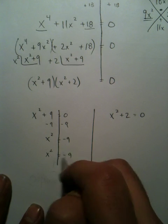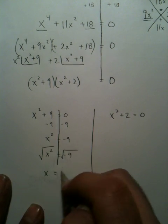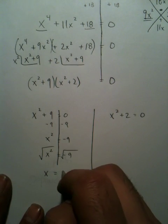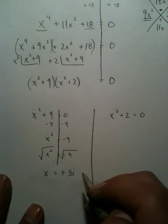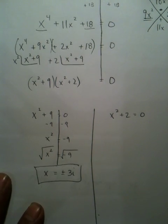In order to get rid of that power of 2, you have to take a radical to both sides. The square root of negative 9 happens to be plus or minus 3i. There are two of your answers.